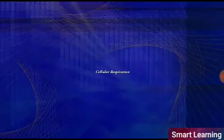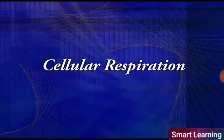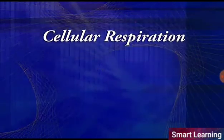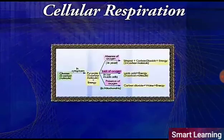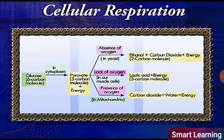We are now in a position to summarize the process of cellular respiration. This schematic figure shows the various pathways by which the glucose molecule can be broken down into simpler products in the presence or absence of oxygen.